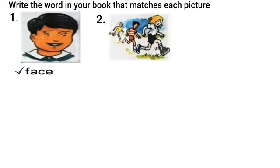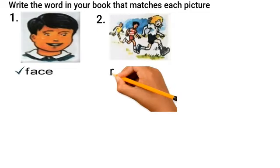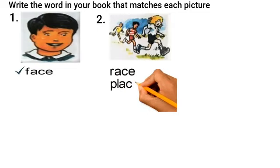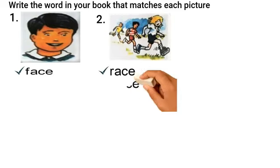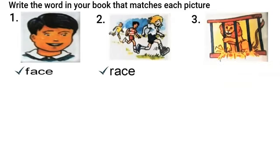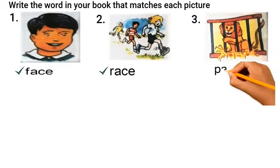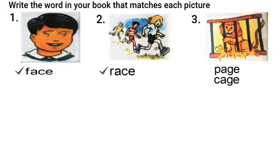Look at the second picture. The two words are race and place. What can you see in this picture? Yes, some boys are making a race among them. So the suitable word for this picture is 'race'. The third picture — you can see a lion in a cage. I think you saw one in the zoo, right? So 'cage' will be matched with this picture.